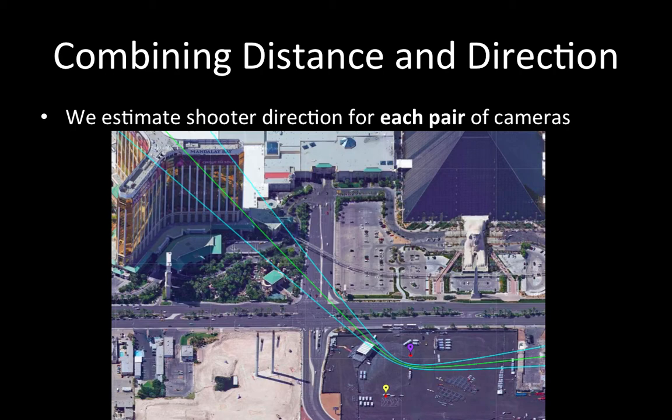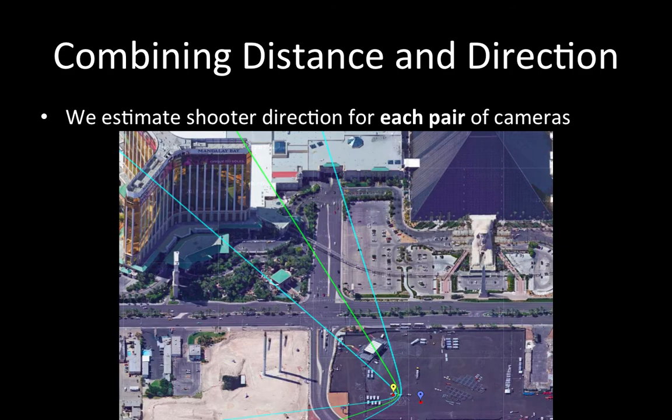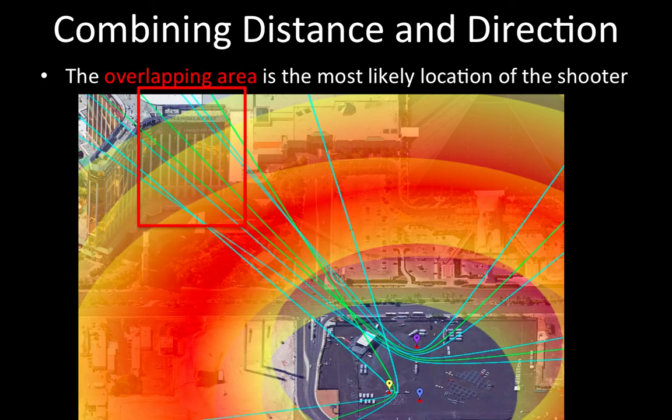As you can see here, we have three pairs of cameras, and all of them point to the same location. By overlapping both methods and all the estimations, we can see there is a clear overlapping area indicating the shooter location.